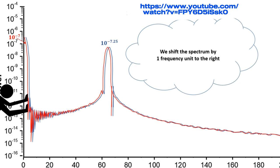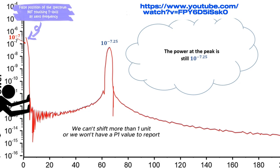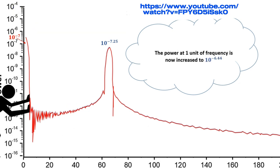We shift the spectrum by one frequency unit to the right. The power at the peak is still 10 to the minus 7.25. The power at one unit of frequency is now increased to 10 to the minus 6.44.